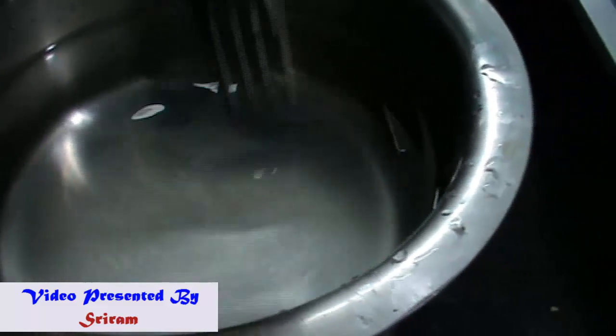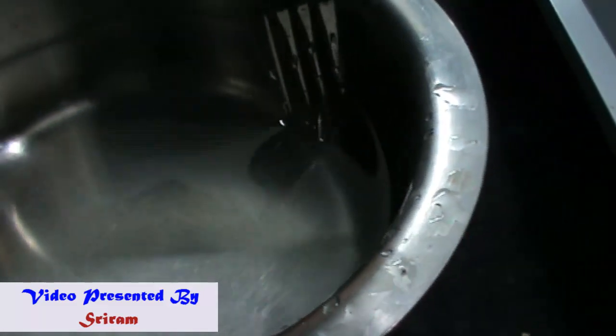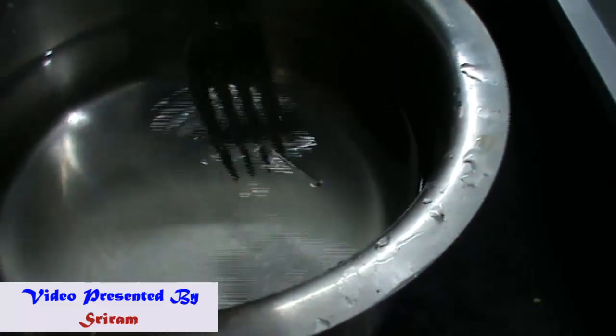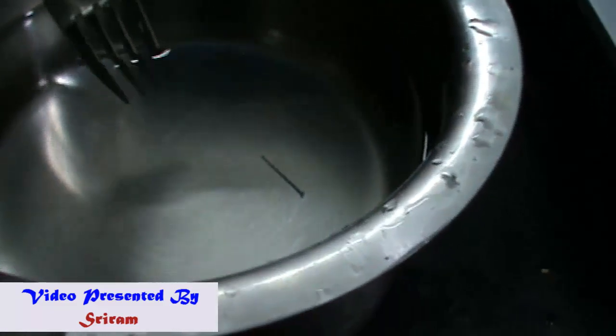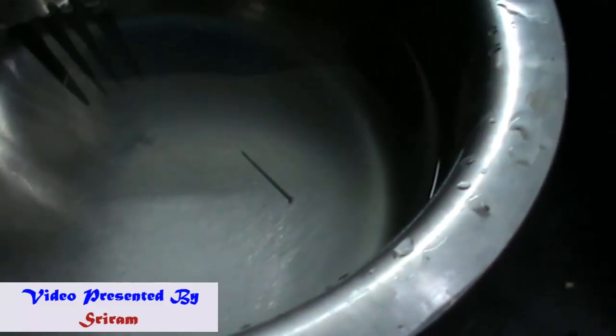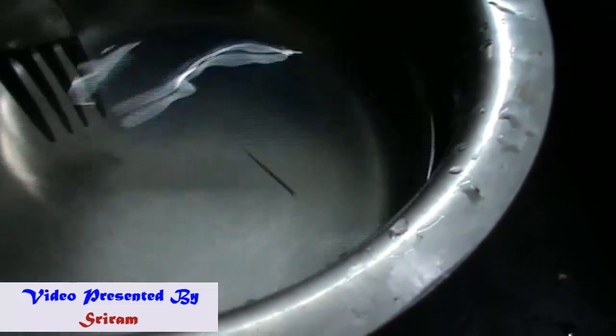So kids, it's time to understand why the pin floats on the surface of water. You have to understand one important property which is called surface tension. Let's understand in simple terms what is surface tension and how it helps the pin to float.